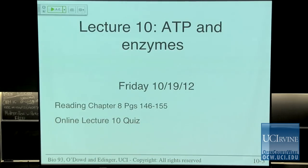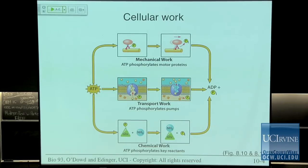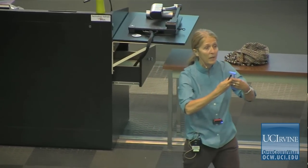Today we are going to focus on ATP and enzymes. We've talked about ATP being important for cellular work. It's important for mechanical work — motor proteins moving alongside skeletal elements. We talked about transport work, where ATP is important in helping move ions up their concentration gradient through transport proteins. And chemical work — we take monomers and put them together into macromolecules, and that takes energy because we're forming higher-energy molecules when forming polymers from monomers.